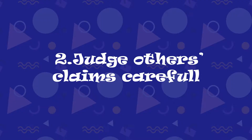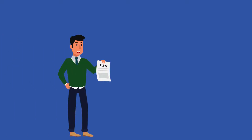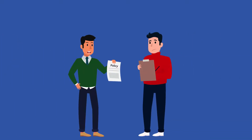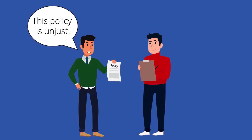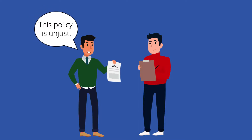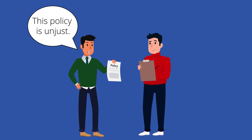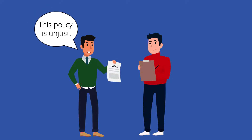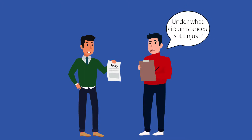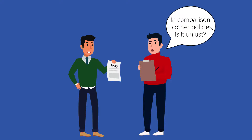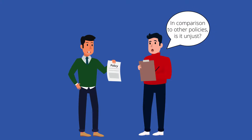Two: judge others' claims carefully. Being aware of the problem of the excluded middle enables you not only to avoid oversimplification but to push back against the oversimplifications others make, so you can more carefully assess their claims. When someone is making claims about a policy being unjust, for example, remember that the policy is likely to be just and unjust to some degree. Keeping this in mind, you can push the person to explain the ways it is just and the ways in which it is unjust. Under what circumstances is it unjust? For whom is it unjust? In comparison to what other policies is it unjust? An accurate picture of the unjustness of a policy often lies in these shades of grey.